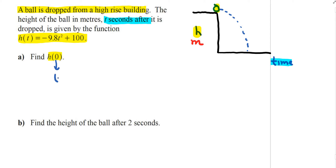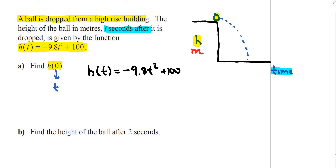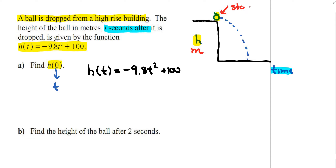When you see h(0), this means time is equal to 0. The equation is h(t) = -9.8t² + 100. Logically, the ball starts at time equals 0, which is when the ball is first dropped. So this question is essentially asking for the height of the building — what is that initial height when the ball begins to fall?